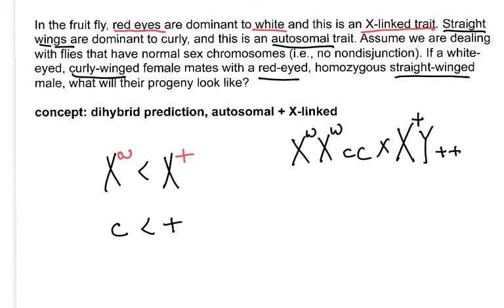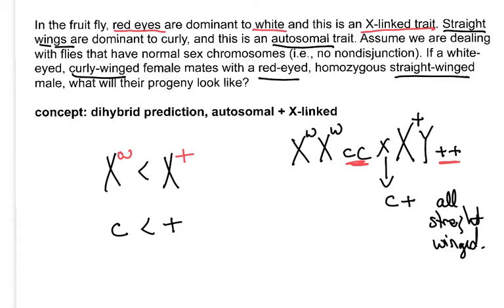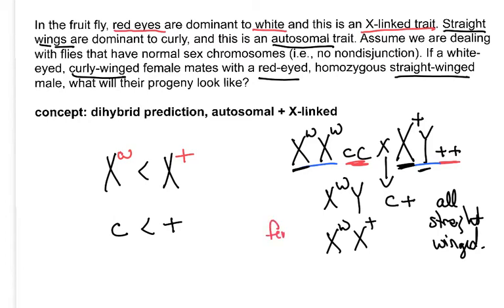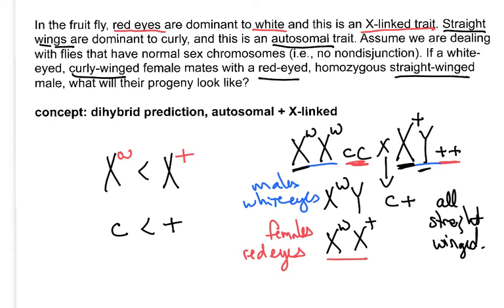What will their progeny look like? Let's cross them. First, deal with the wings: all offspring will be C and plus, and since curly is recessive, they'll all be straight-winged — that goes for all progeny. Now look at the sex chromosomes: there are really only two classes. From mom, they all get X^w. If they get the Y from dad, they're males; if they get X^+ from dad, they're females. The females will have red eyes because white is recessive, but the males will have white eyes. So males have white eyes and straight wings, and females have red eyes and straight wings.